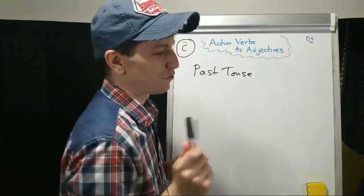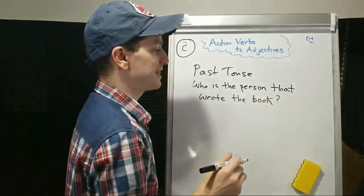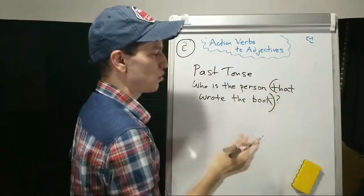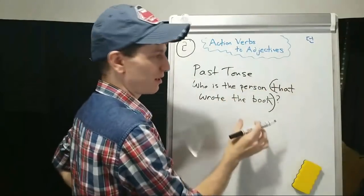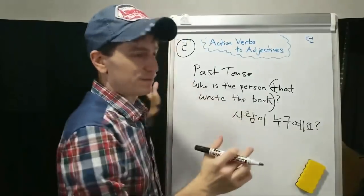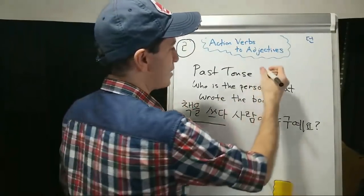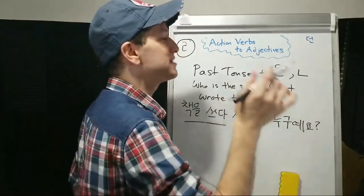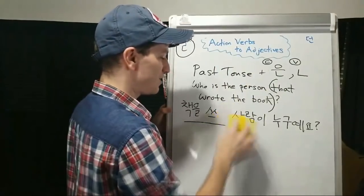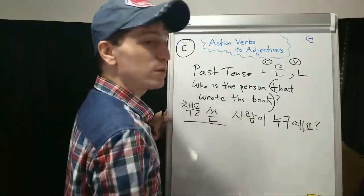The next form is past tense. You could say people who studied Korean are pretty, or is there anyone at the party who you knew, or: who is the person that wrote the book? The part 'who is the person' is the main clause; 'that wrote the book' describes the person. 사람이 누구예요? — who is person? To make past tense, take the action verb stem and attach 은 if it ends in a consonant, or 은 if it ends in a vowel. For 책을 쓰다 — to write a book — remove 다, the stem 쓰 ends in a vowel, so attach 은: 쓴. 책을 쓴 사람이 누구예요? — Who is the person who wrote the book?